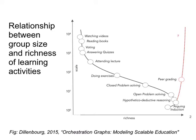I love this graph. I actually didn't put it in my thesis and I kind of regret that. This is from a wonderful book by Pierre Dillenberg called Orchestration Graphs: Modeling Scalable Education. In this graph, he basically — and this is not a very empirical or scientific graph — tries to juxtapose the relationship between group size and richness of learning activities.